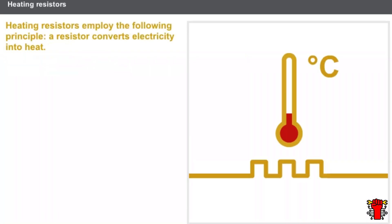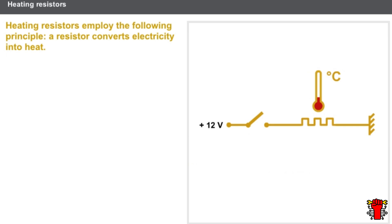Actuators employ various principles according to their function. Heating resistors are a first type of actuator. A resistor converts electricity into heat. Heating resistors are mainly positive temperature coefficient thermistors. The power supply for the heating resistors is time delayed and generally controlled by a relay.